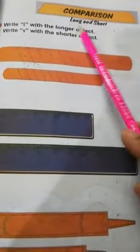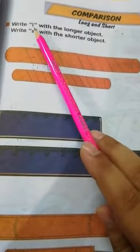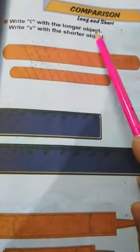Next page, page number 39, comparison, long and short. Write L with the longer object. Write S with the shorter object.